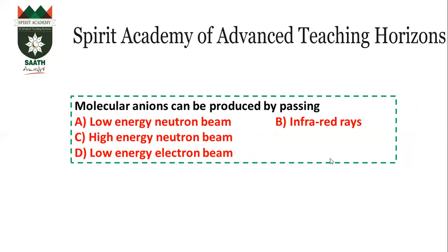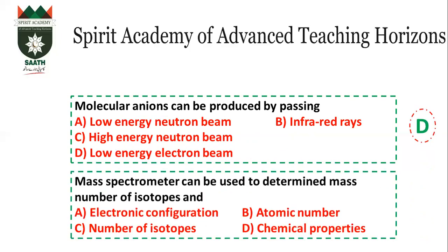Molecular anions can be produced by passing a low energy beam of electrons. Anions are formed by gain of electrons — when gain occurs, an anion forms. When a low energy beam of electrons is used, the negative charge is acquired, so the answer is D. Similarly, a mass spectrometer can be used to determine the mass number of isotopes and the number of isotopes — the number of peaks equals the number of isotopes. So the answer is C.